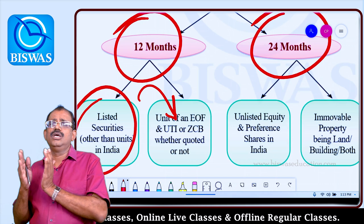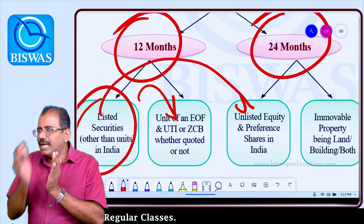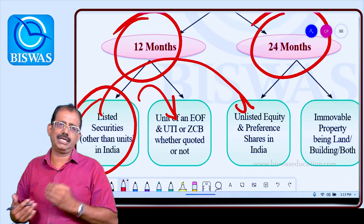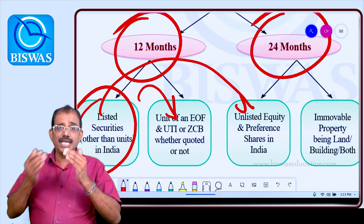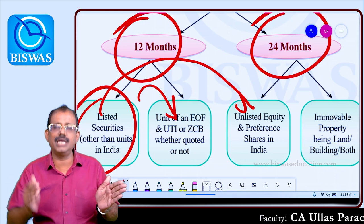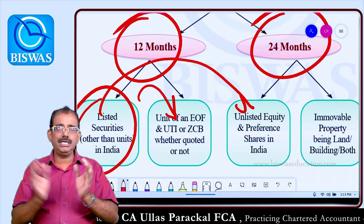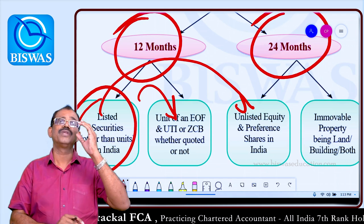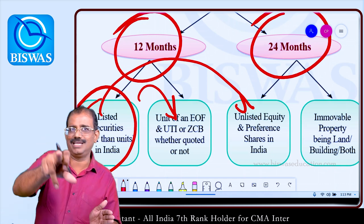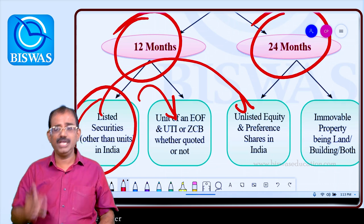Now, for 24 months: in the list of securities, there are two variables — equity shares and preference shares. If listed, the holding period is 12 months. If unlisted, the holding period is 24 months. So, listed equity and preference shares: 12 months. Unlisted equity and preference shares: 24 months. Clear?